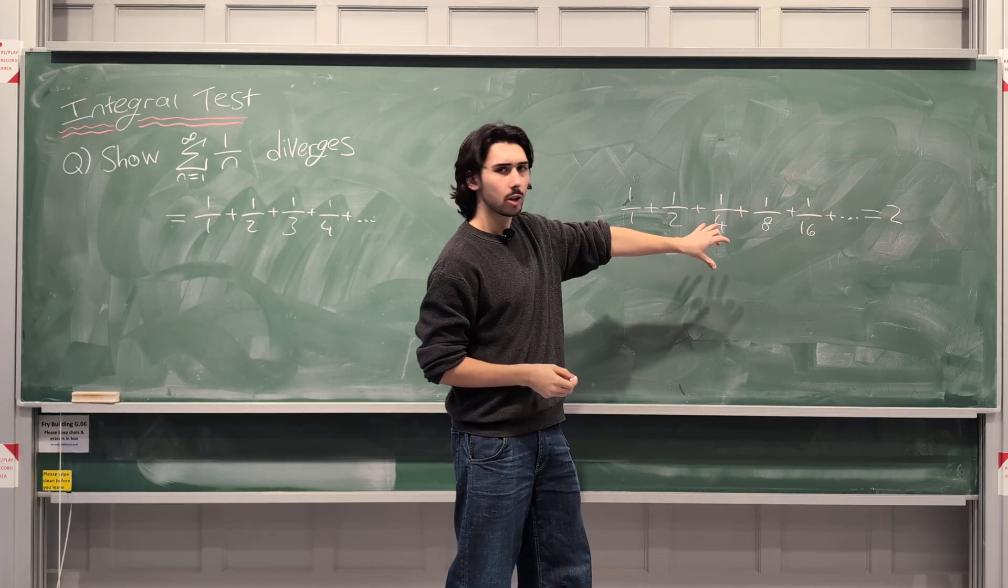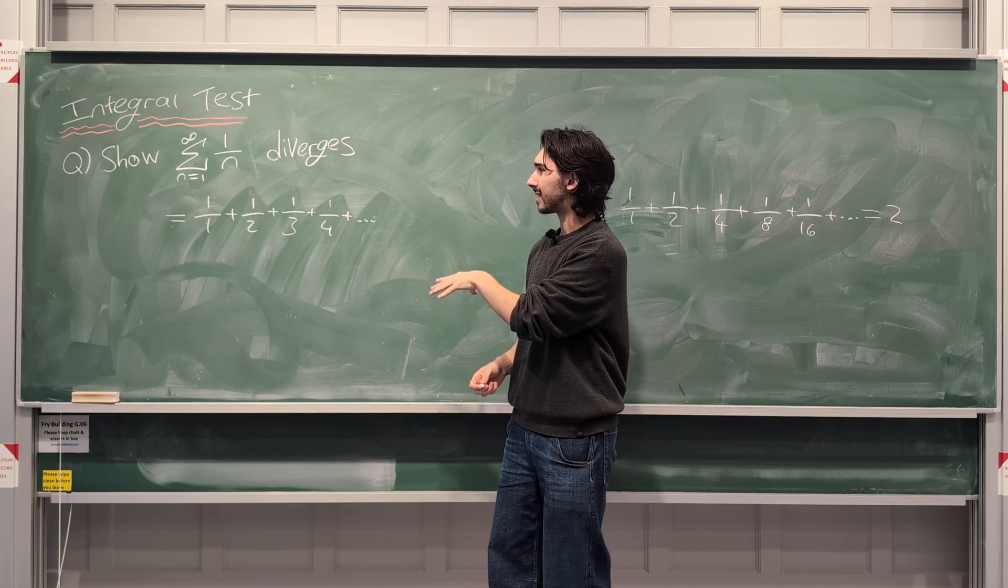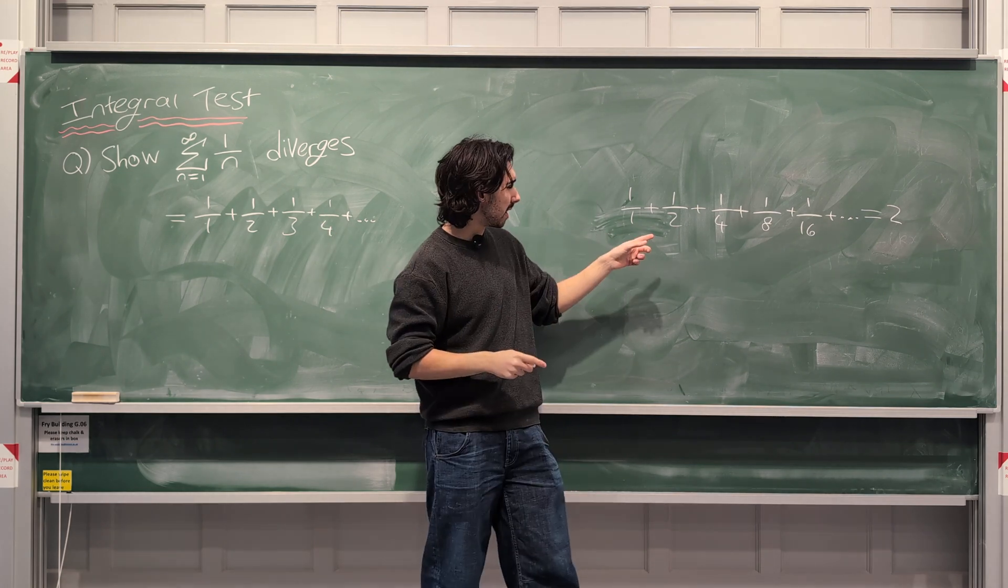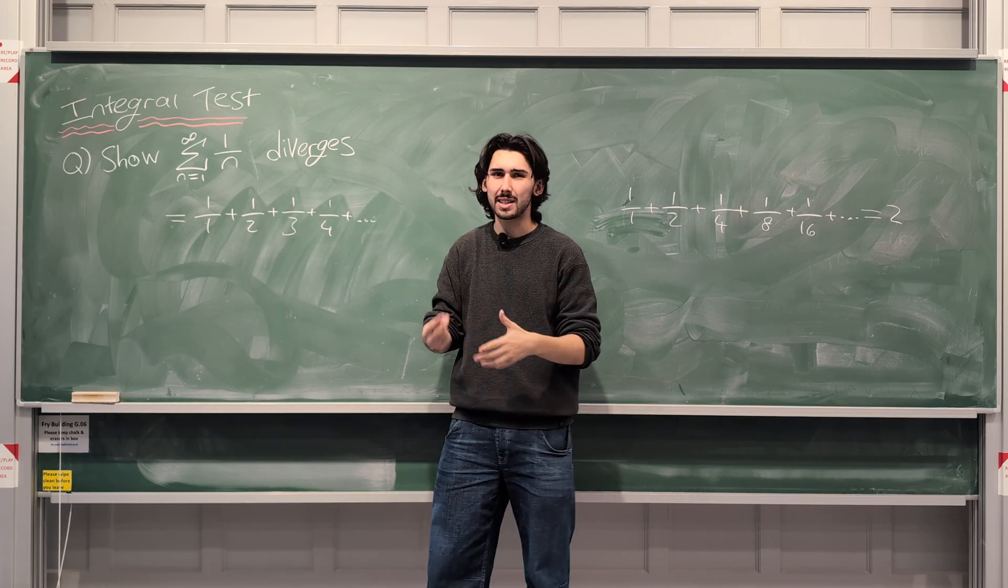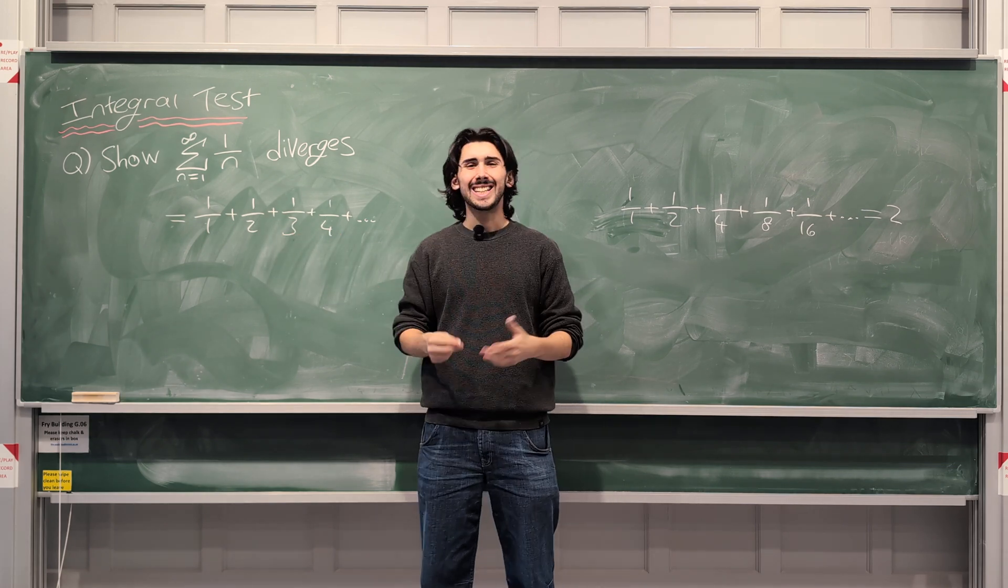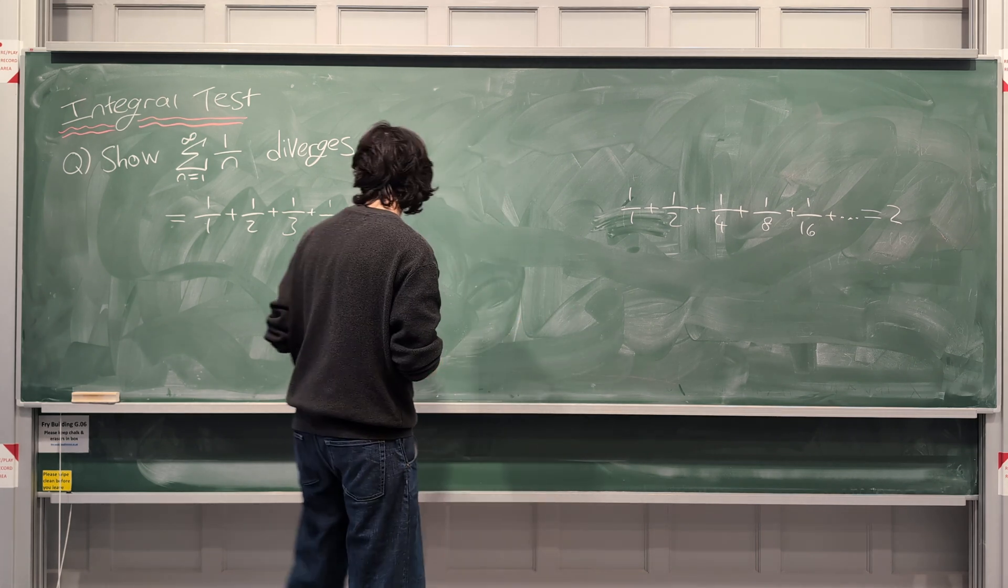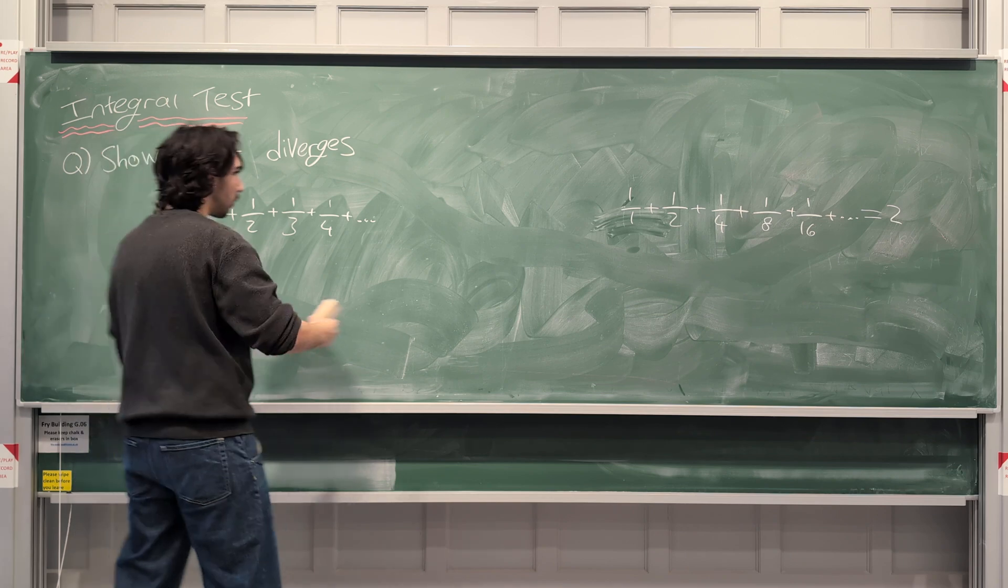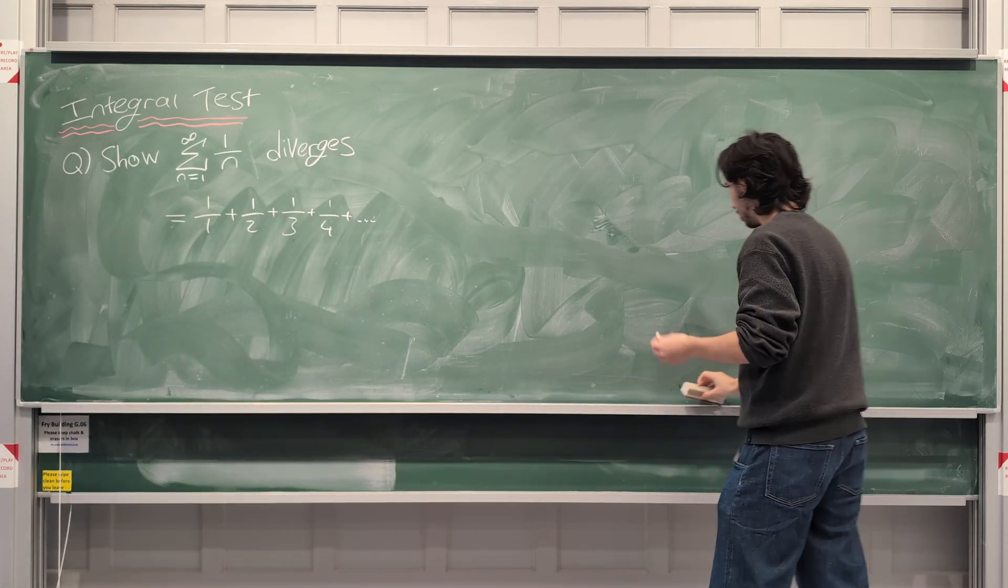So why should this converge and this diverge? You might say, well, this one does look bigger than this one because there's more terms in there. There's like a one-third that's adding to it. There's more terms. Can we formalize it though? Can we explain it a bit better mathematically? Well, yes, we can. So it's not always obvious whether something will converge or diverge, but we have methods to do that with.